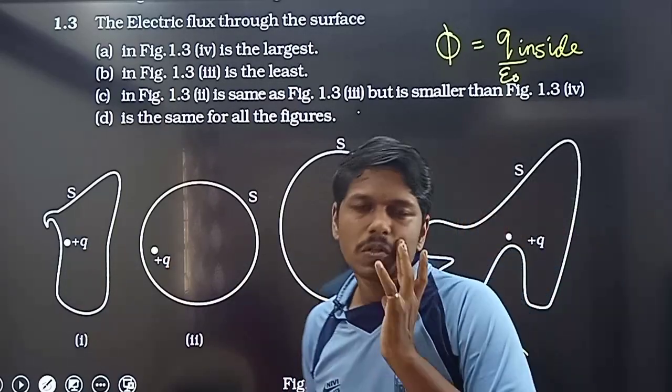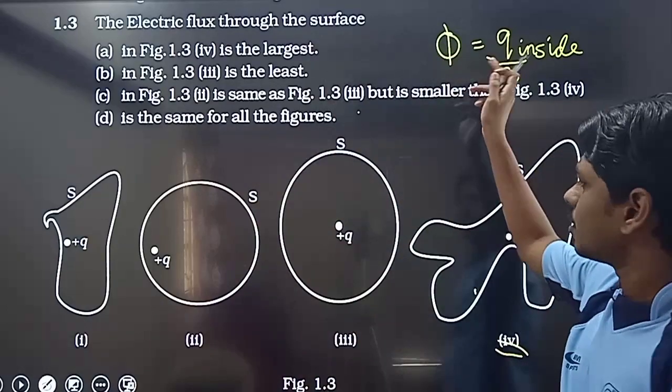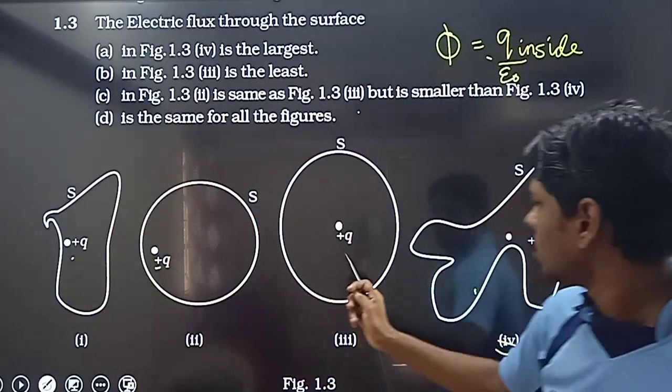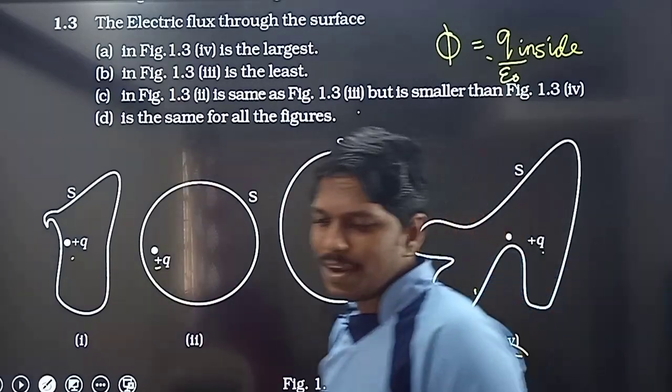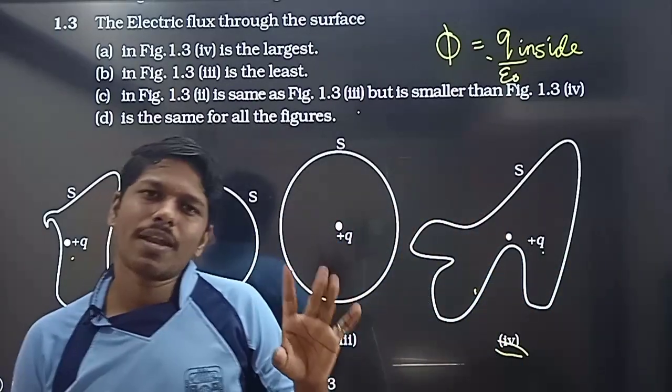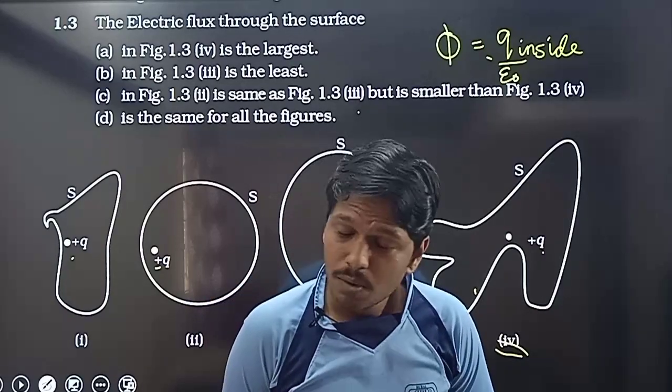If you look at the flux, what matters is the total charge. The charge is equal in all cases, and epsilon not is constant. If the charge is equal, then the flux value is equal.